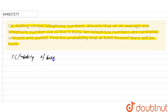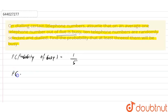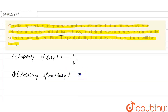We have the probability of busy, and we know that it will be equal to 1 by 5, because 1 telephone number out of 5 is busy. So the probability of being busy P equals 1 by 5. The probability of not busy, Q, equals 1 minus 1 by 5, which equals 4 by 5.